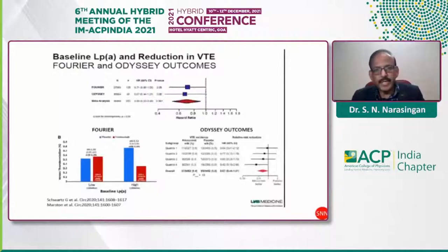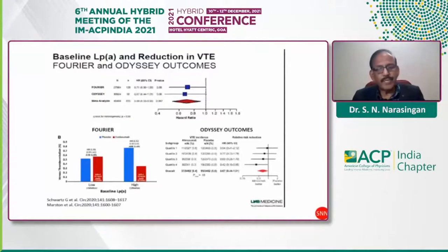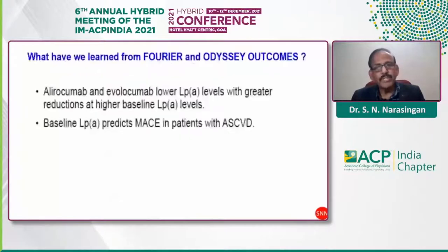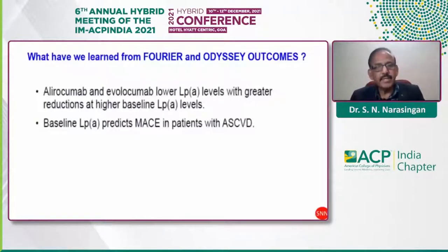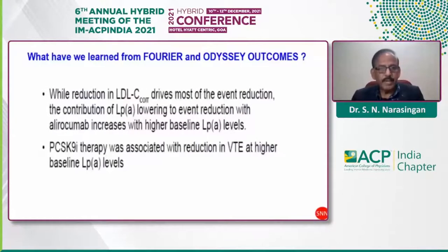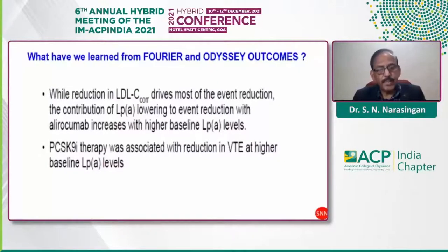There is also data on venous thromboembolism — a reduction in VTE was seen in patients recruited in both the FOURIER and ODYSSEY OUTCOMES trials. Overall, event rate reductions were particularly based on baseline levels of lipoprotein(a). Patients with higher baseline Lp(a) showed marked reduction in venous thromboembolism. Key learnings: PCSK9 inhibitors lower Lp(a) with greater reductions at higher baseline levels; baseline Lp(a) predicts MACE in established ASCVD; and PCSK9 inhibitor therapy is associated with reduction in venous thromboembolism at high baseline levels.